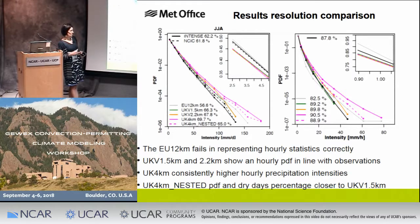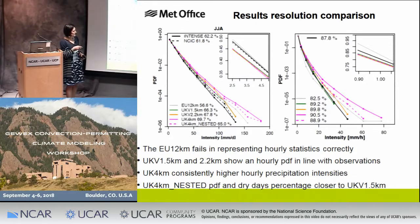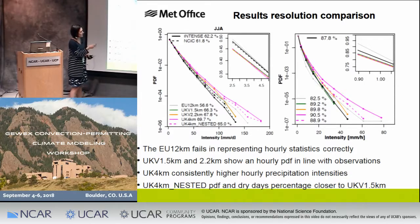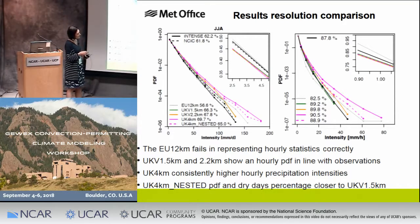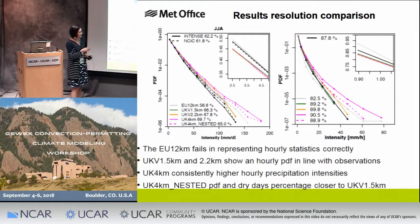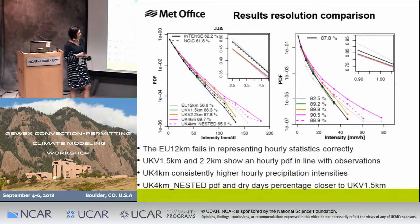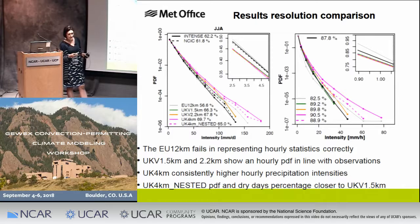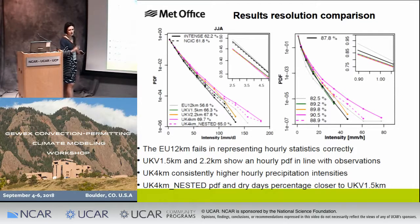For the resolution comparison, we show PDFs for daily and hourly precipitation, an enlargement of the lower end of the curve, and the percentage of dry days and dry hours. Focusing on the hourly: observations are in black, 12 km in gray — it fails to represent the statistics correctly. The 1.5 km in green and 2.2 km in orange/yellow are much better at representing the PDF. The 4 km in pink consistently shows higher hourly precipitation intensity, no better than 12 km. But the nested 4 km version gets much closer to 1.5 km, because nesting allows some small-scale precipitation and explicit convection at the boundaries that the 4 km can more easily spin up.